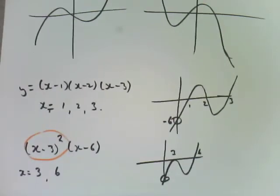We need to find the y-intercept, which is minus 3 times minus 3, which is 9, times minus 6, which is negative 54. So that's all it is.